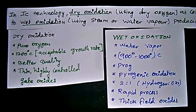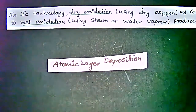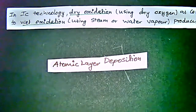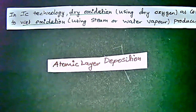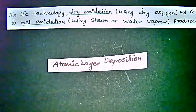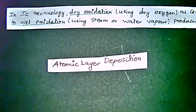Beyond just studying dry and wet oxidation, we should also look at what exists in real life. In real life, atomic layer deposition is used — applying chemical precursors to a layer to form an oxidation layer by atomic interaction. Atomic layer deposition will be a more perfected technique in the future. Thank you for your comments, see you next time.